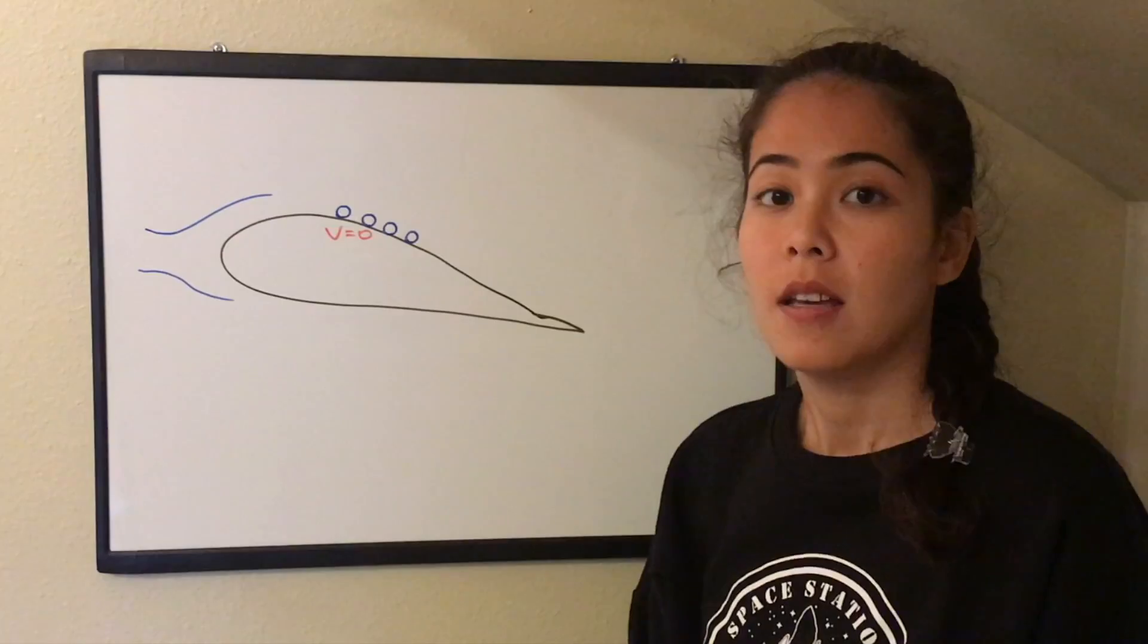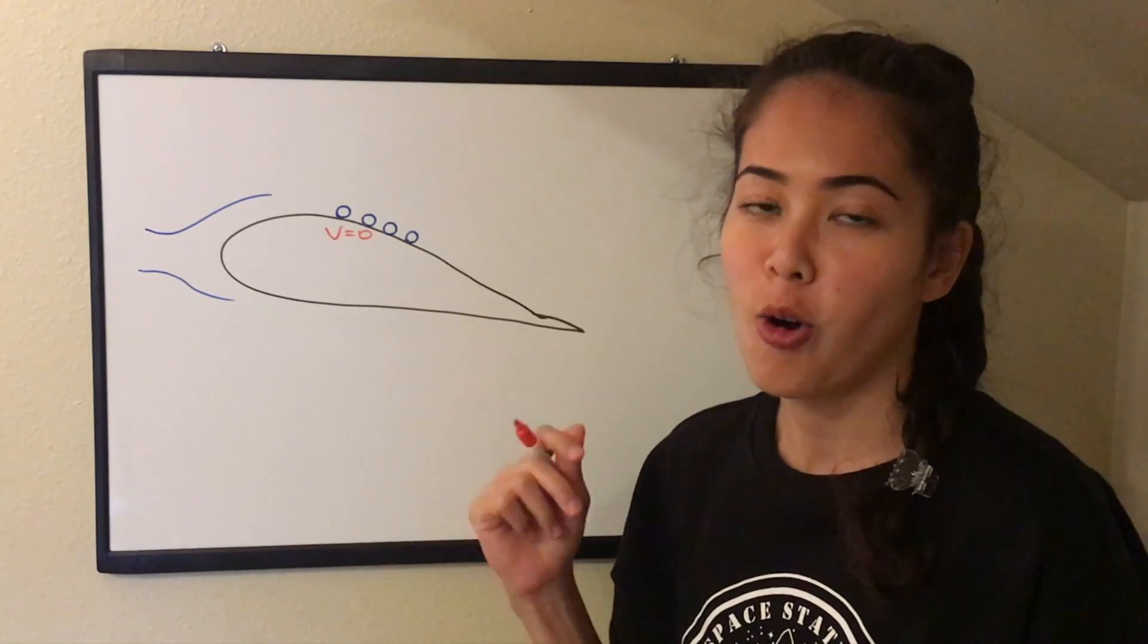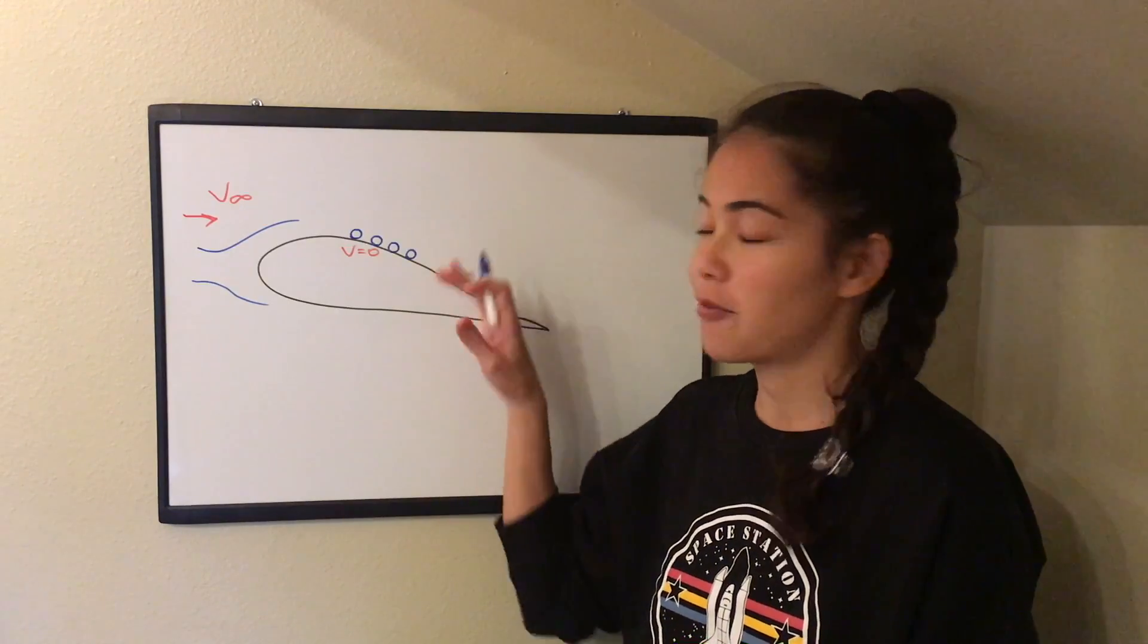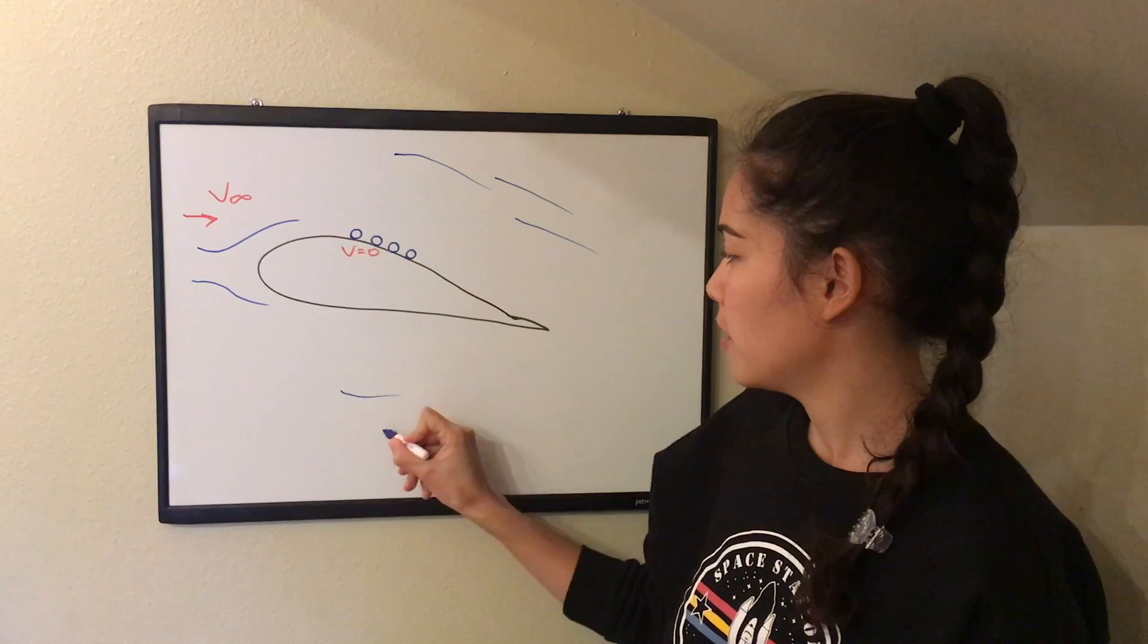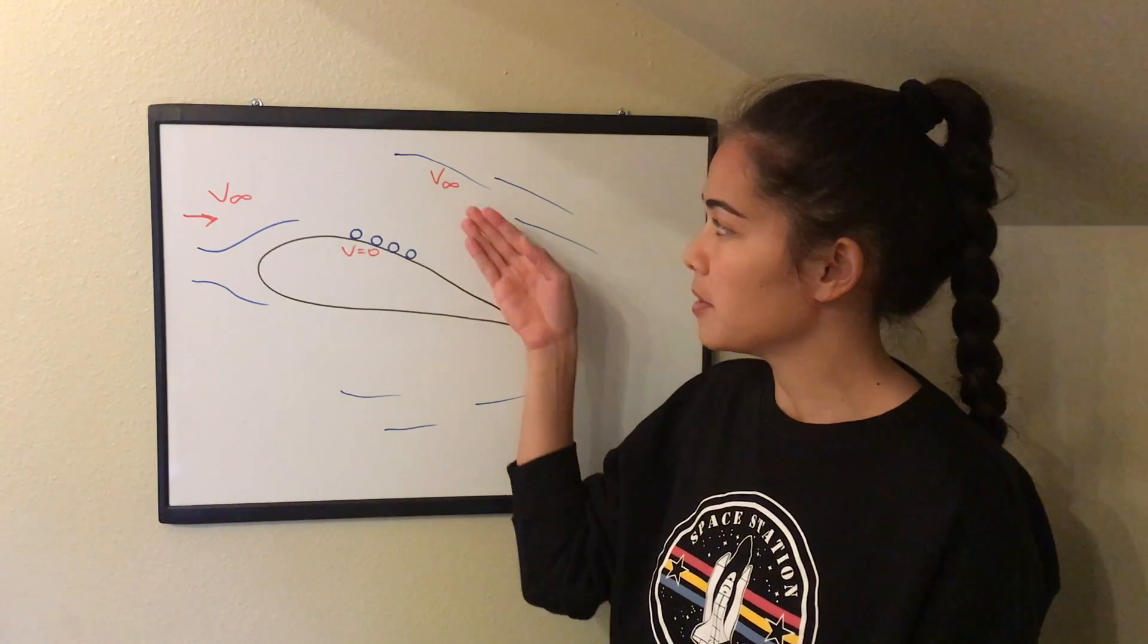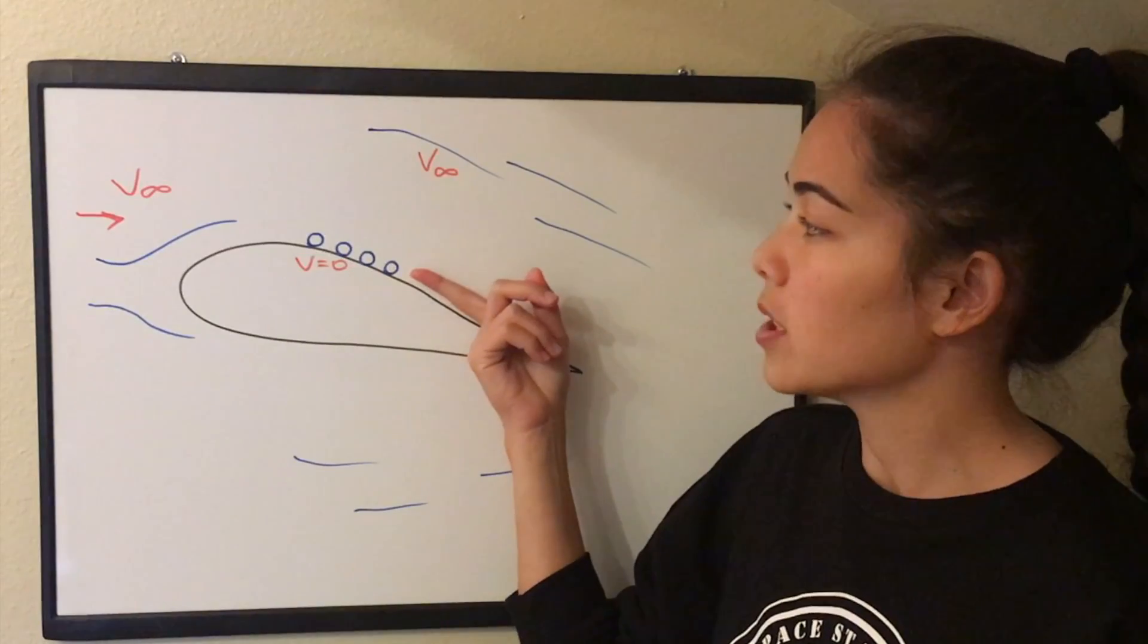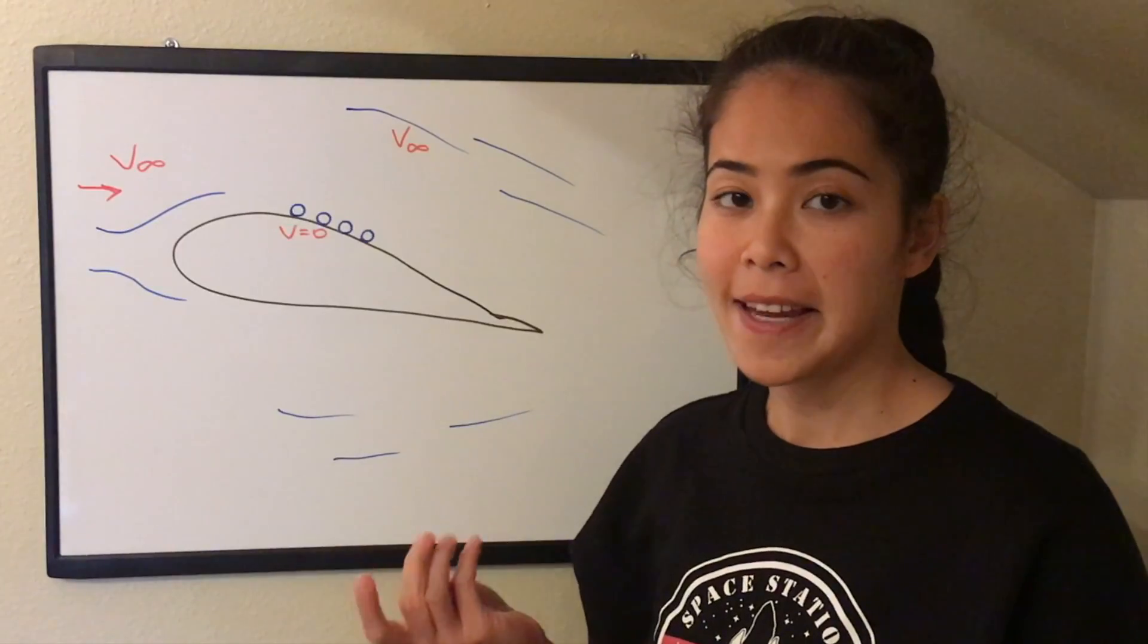But we know that far from the airfoil the air has speed of v infinity, the free stream velocity. Let's draw it here, free stream velocity. But what happens far from the airfoil? The air around here doesn't know there's an airfoil in between. So the air here still has velocity v infinity. And now how is it possible to have air molecules with v infinity here and air molecules with v equals zero here? This is all possible because of the boundary layer.